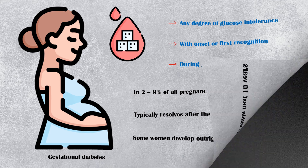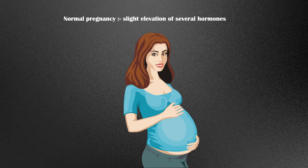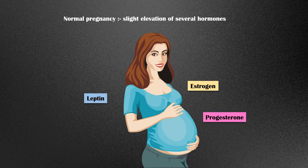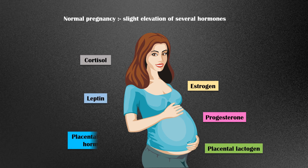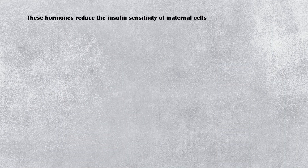In a normal pregnancy, there is a slight elevation of several hormones in maternal blood, including estrogen, progesterone, leptin, cortisol, placental lactogen, and placental growth hormone. These hormones, especially placental lactogen, reduce the insulin sensitivity of maternal cells.